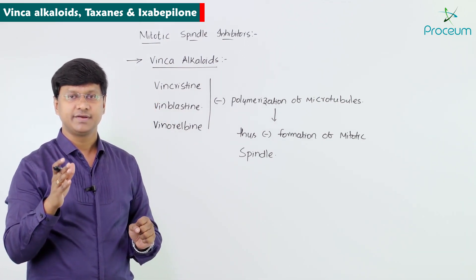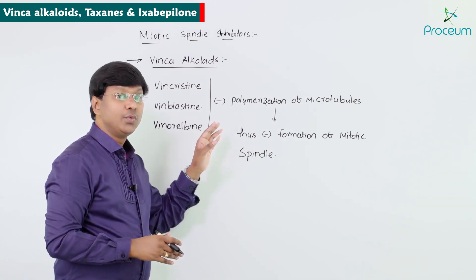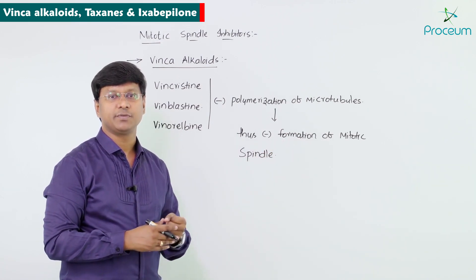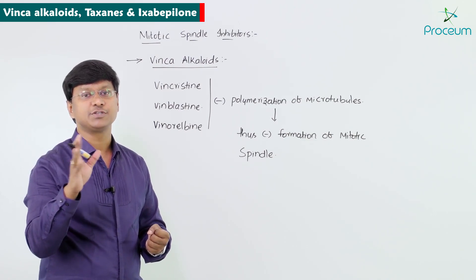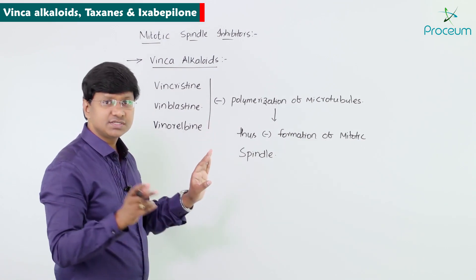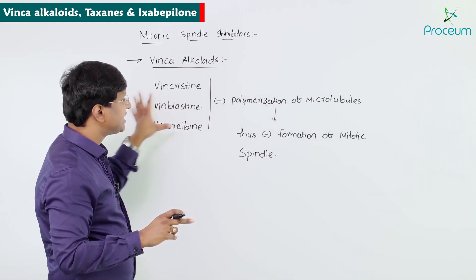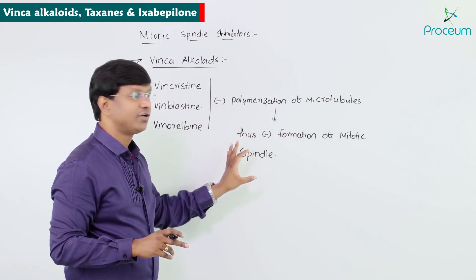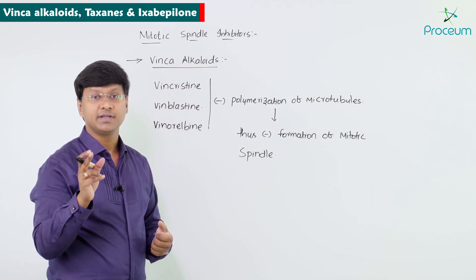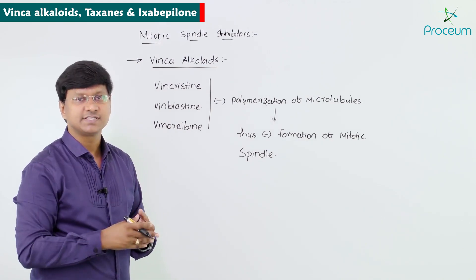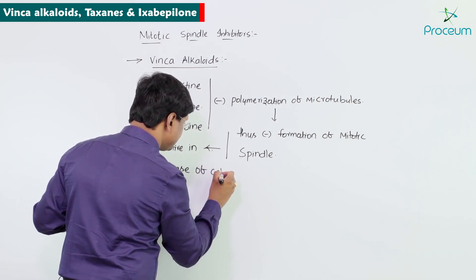In the cell cycle — G0, G1, G2, S phase, and M phase — mitotic spindle formation is required during the M phase. Because these drugs inhibit polymerization of microtubules and thus inhibit mitotic spindle formation, the vinca alkaloids are effective in the M phase of the cell cycle.